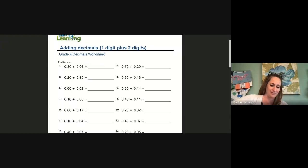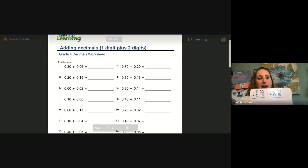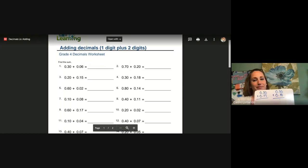All right. Let's go ahead and put up our next two problems for three and four. So, for three, we have 20 hundredths plus 15 hundredths. For number four, we have 30 hundredths plus 18 hundredths. Let's pause and find our two sums now. For number three, we start all the way on the right. You should have come up with 35 hundredths. For number four, we start all the way on the right. You should have come up with 48 hundredths. Super easy.